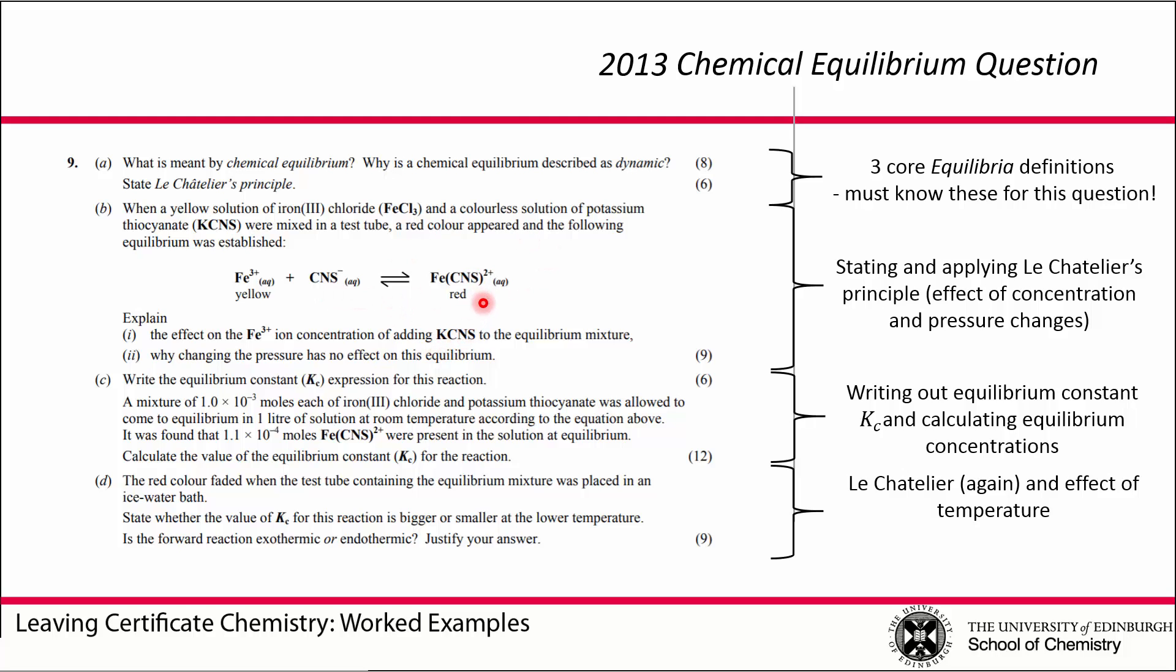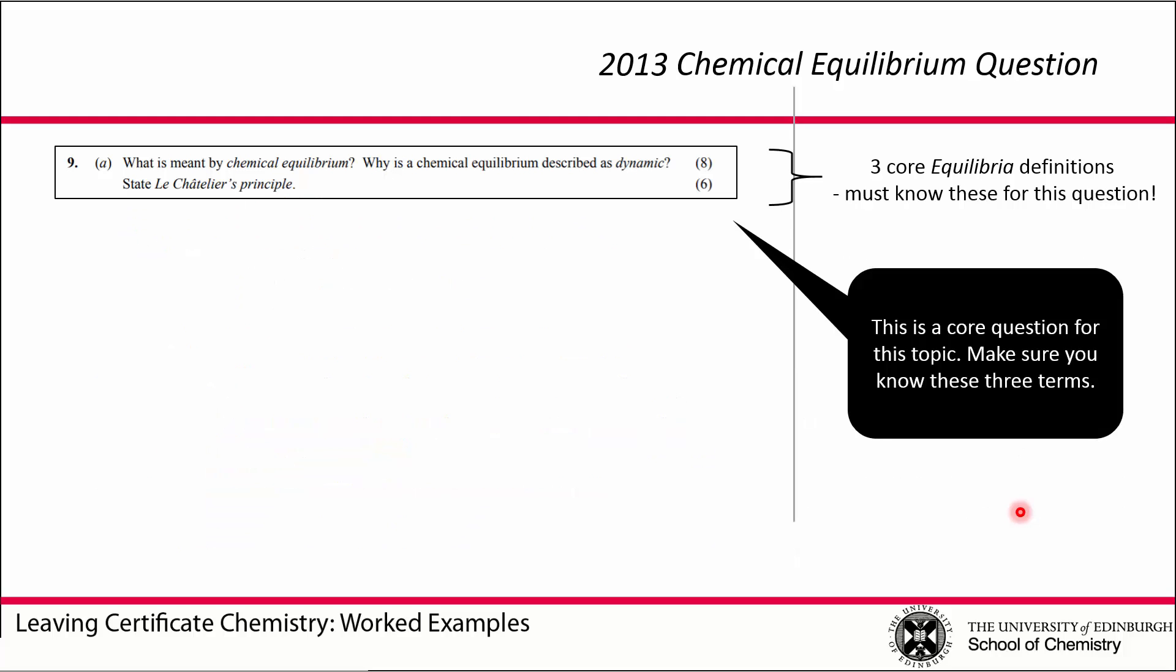It covers some issues around Le Châtelier's Principle, then calculating equilibrium constants and equilibrium concentrations, and finally another query looking at the effect of temperature. So, first of all, what are these definitions?